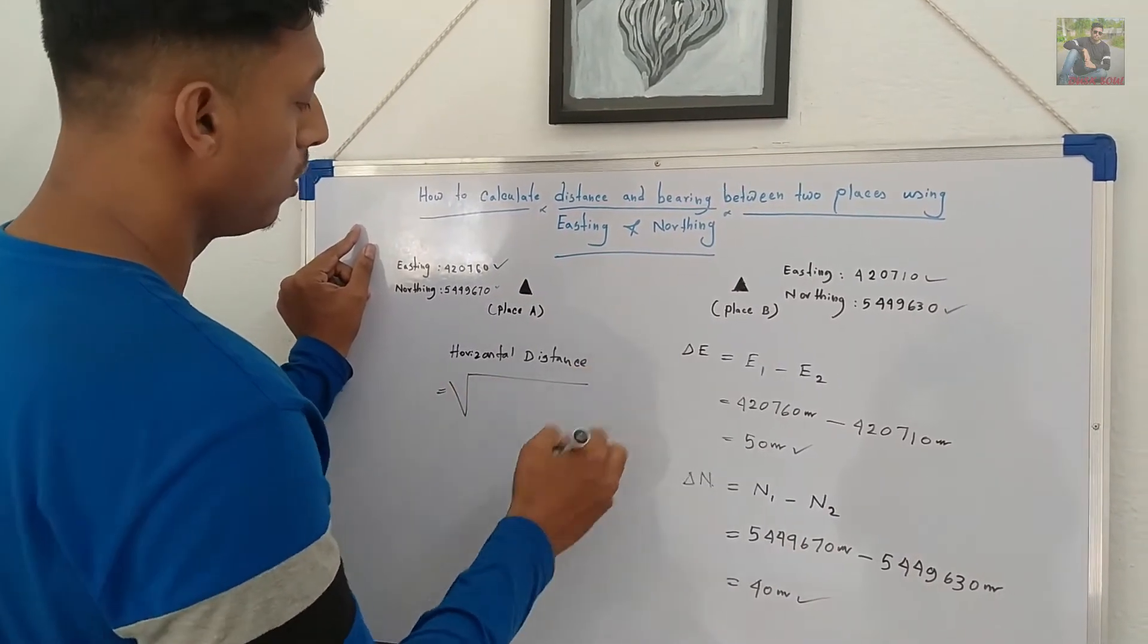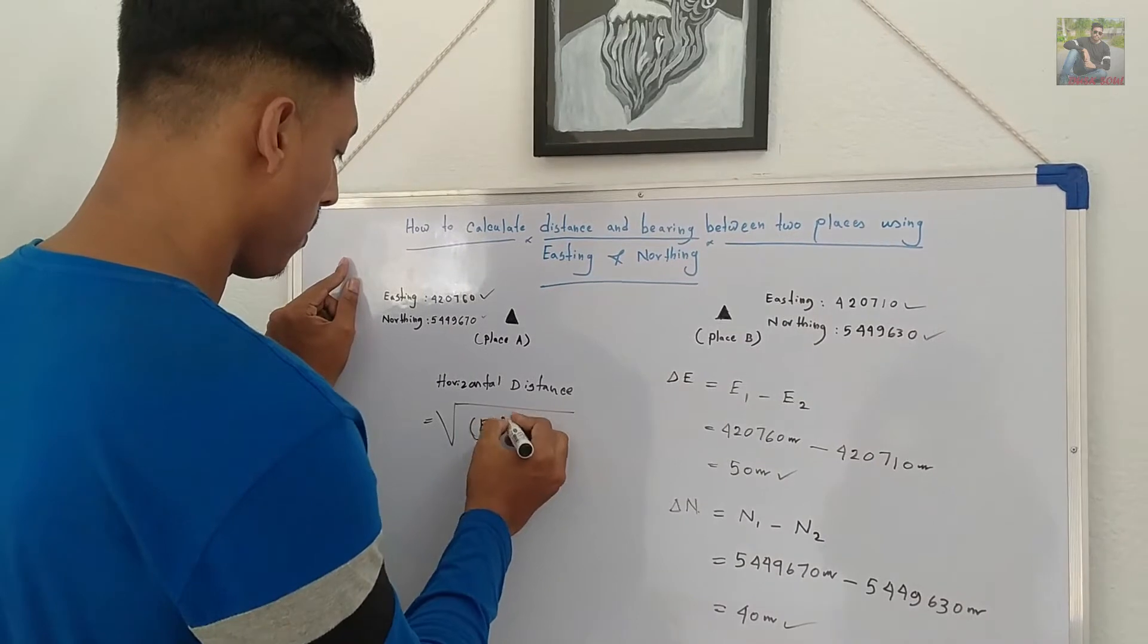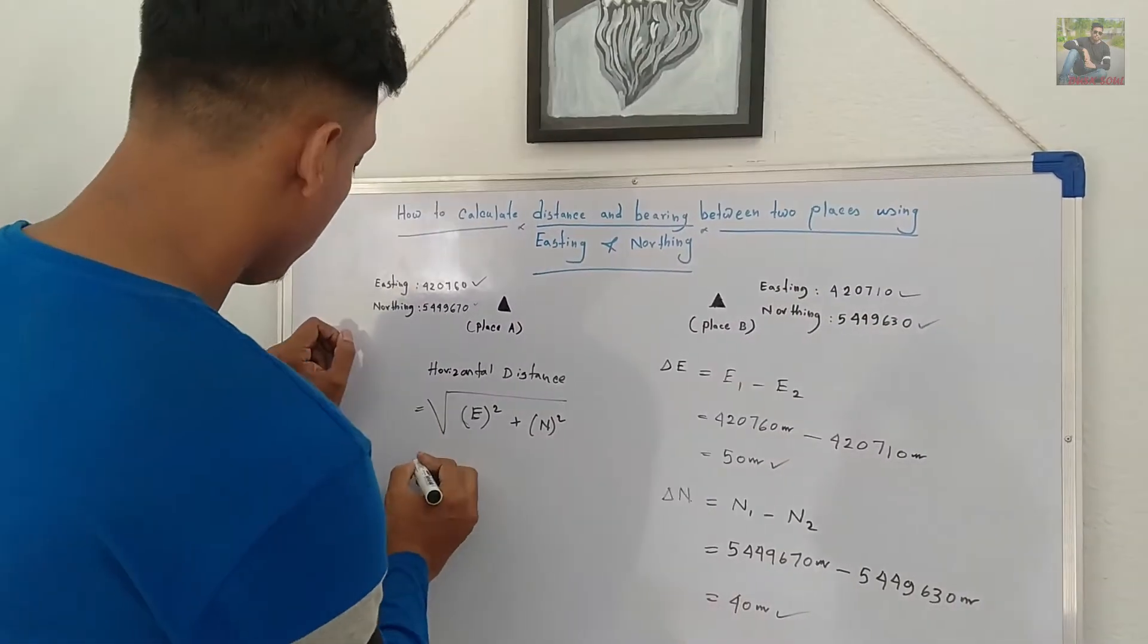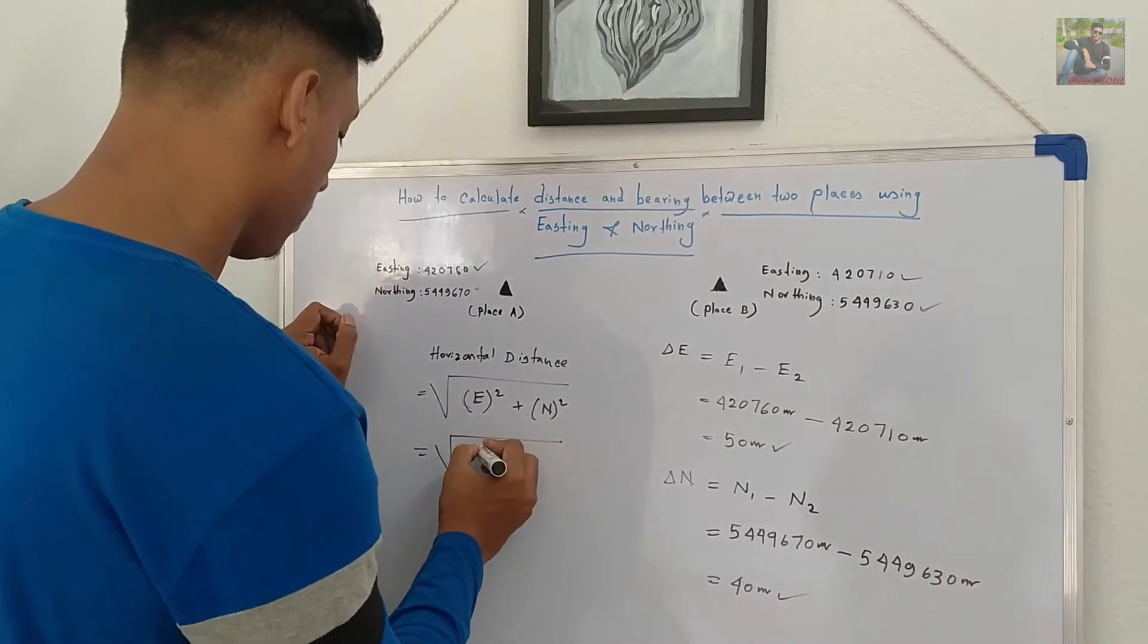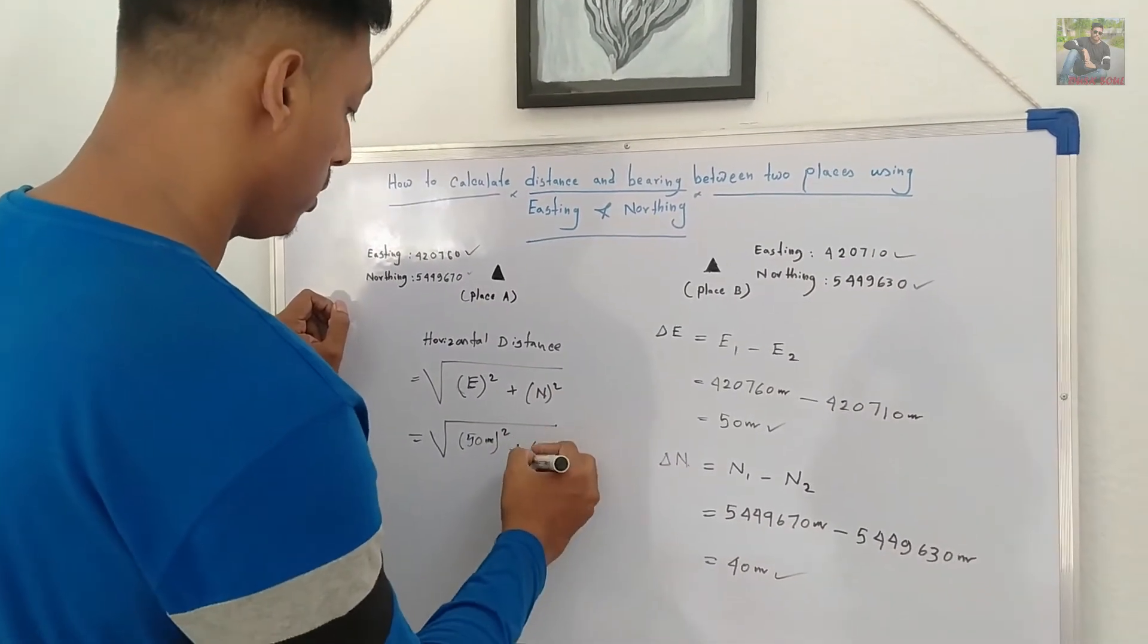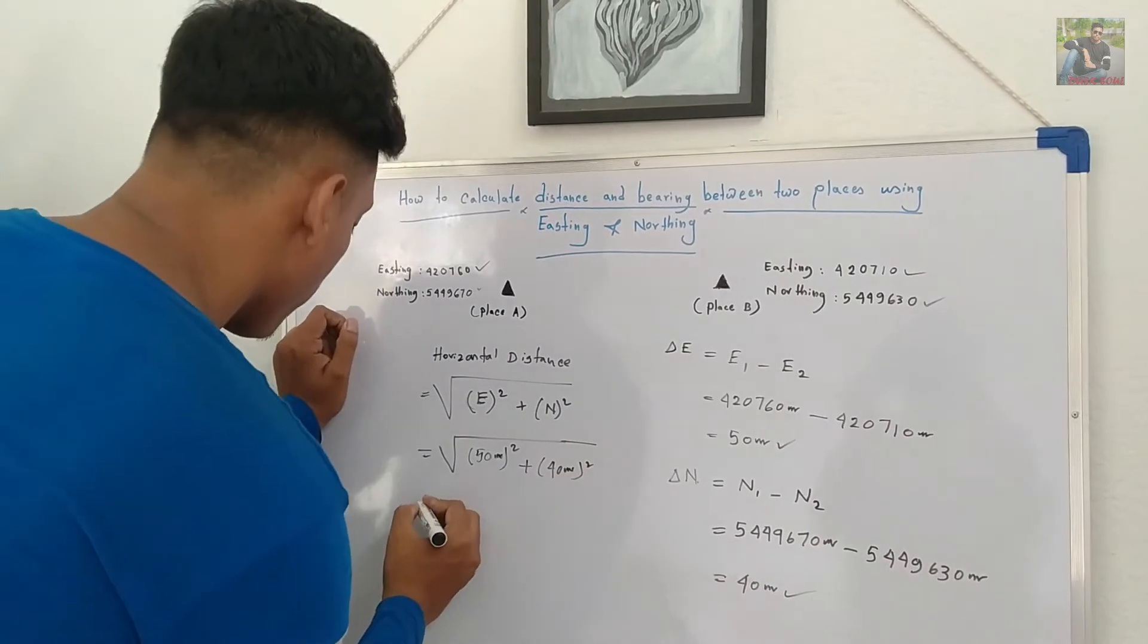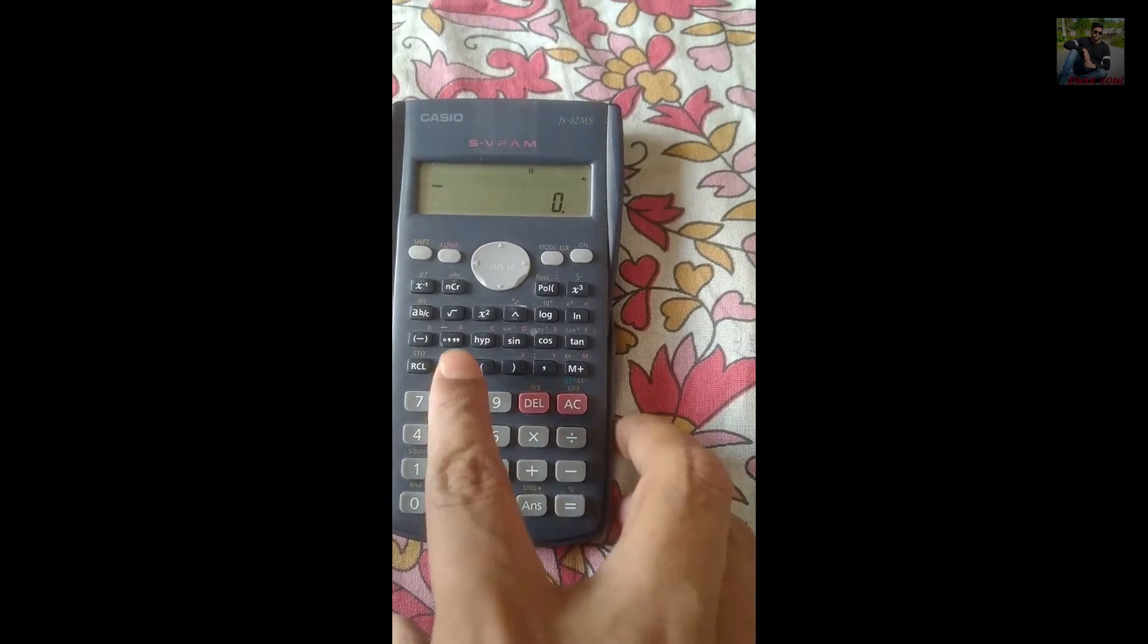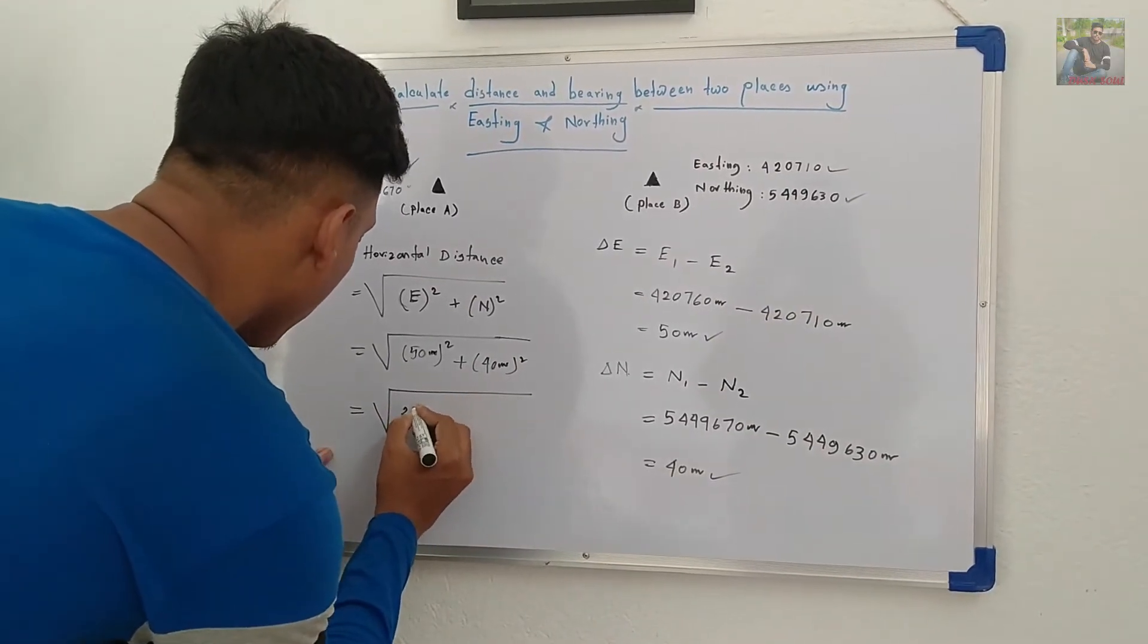Here, this is the formula: root of delta E whole square plus delta N whole square. 50 square is 2,500 plus 40 square is 1,600.